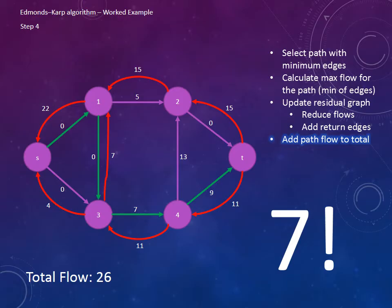As all edges from the source are maxed out, the algorithm terminates with a total flow of 26.